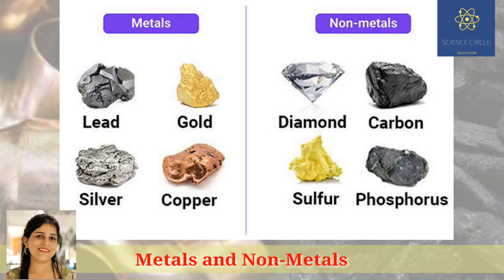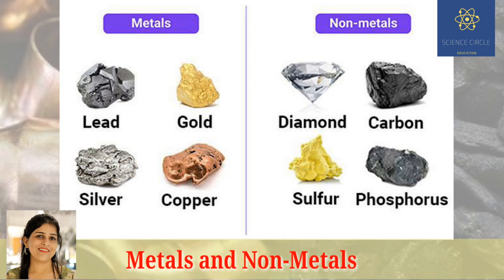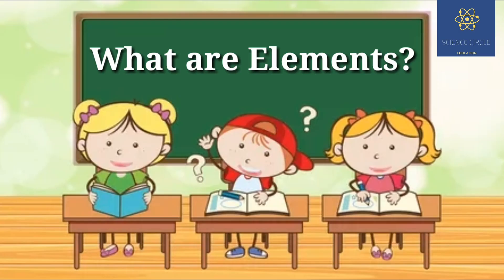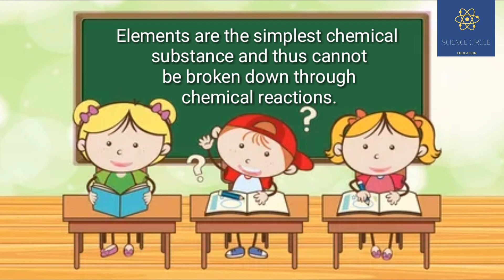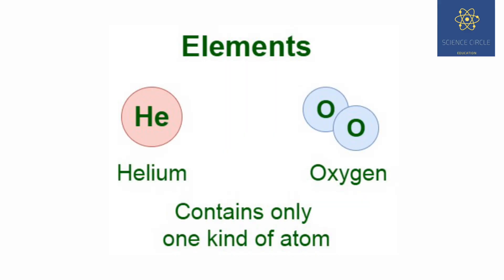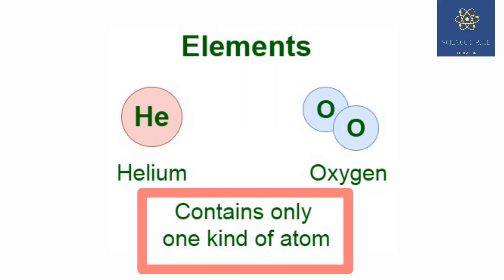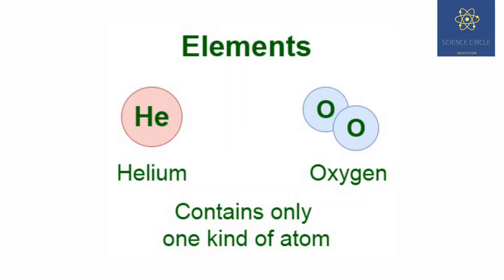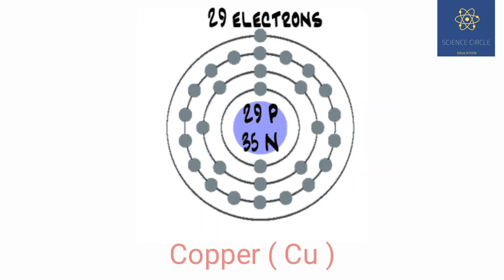Before we start with the chapter, let us recall about elements. Elements are chemical substances that cannot be broken down into any other substances. An element is a pure substance consisting of only one type of atom, which all have the same number of protons in their nuclei.